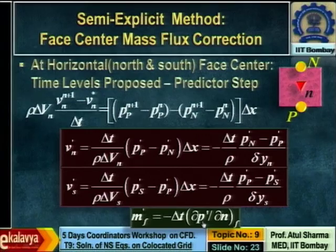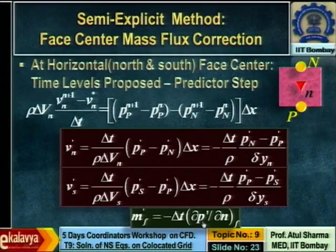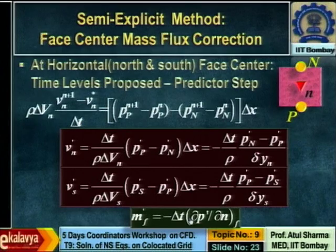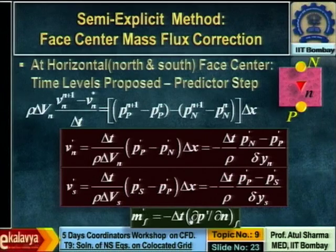This general expression is applicable to all four faces. This equation is analogous to Fourier's law of heat conduction — minus K times dT/dN — where delta-t is analogous to K and pressure correction is analogous to temperature. That is why when this expression is substituted into the continuity equation, it becomes similar to the steady-state heat conduction equation, where delta-t acts like a conductivity.